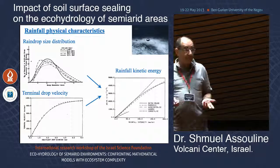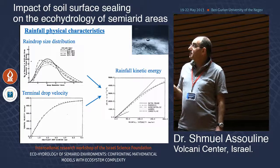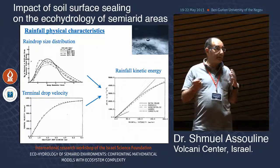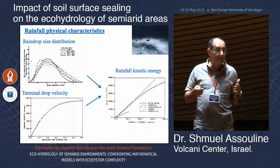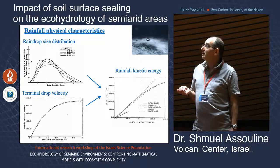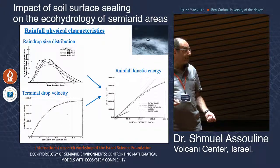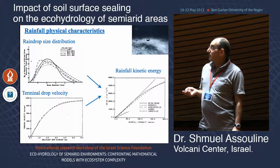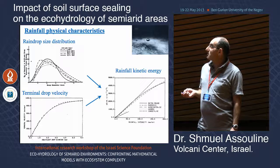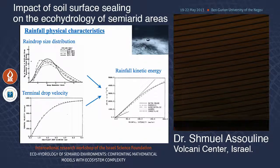To characterize rainfall, we need to know the raindrop size distribution, which is a function of rainfall intensity and depends on location and rainfall type, and the terminal velocity of each raindrop at contact with the soil surface. From these two elements we can determine the rainfall kinetic energy imparted to the soil surface, which is also a function of rainfall intensity and varies depending on location and rainfall type.